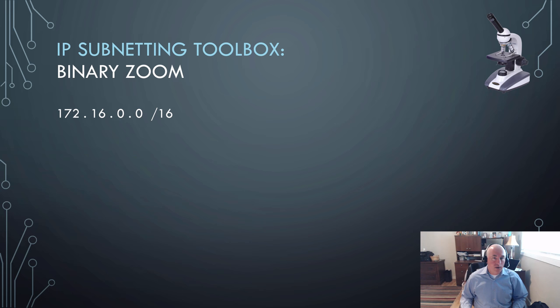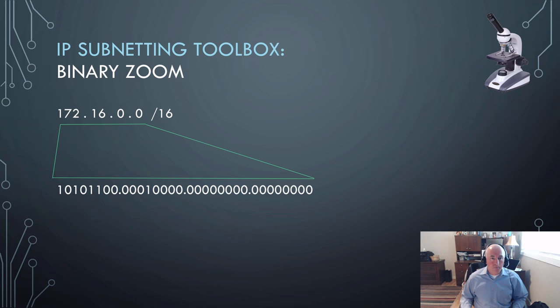Let's take 172.16.0.0 slash 16. That's going to be the number we go ahead and zoom. If I zoom that down into binary, which is what the binary zoom tool does, we just write the number in binary.